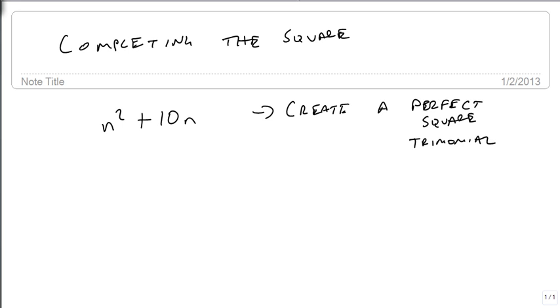So we need to have something plus what makes this a perfect square trinomial. Remember, a perfect square trinomial is always of the form a squared plus 2ab plus b squared.